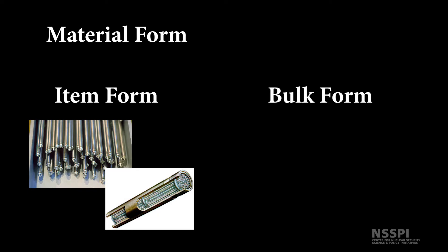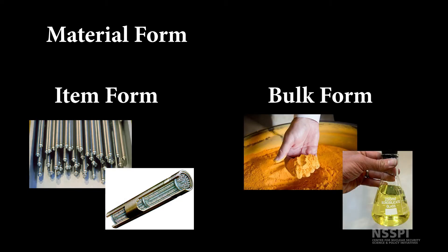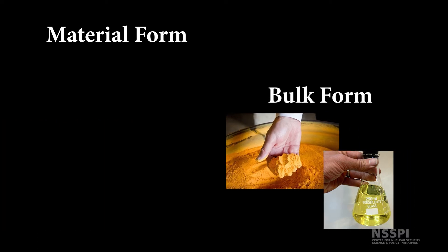Nuclear materials are also classified by their material form, whether they could be considered as items or as bulk. Item form refers to individually identifiable units that are kept intact during their stay in an MBA — generally things you can easily count, like fuel assemblies, bundles, pins, plates, etc. Bulk form refers to material in loose form such as liquid, gas, or powder, or in a large number of small units like pellets or pebbles, that are not each individually identified for nuclear material accountancy purposes.